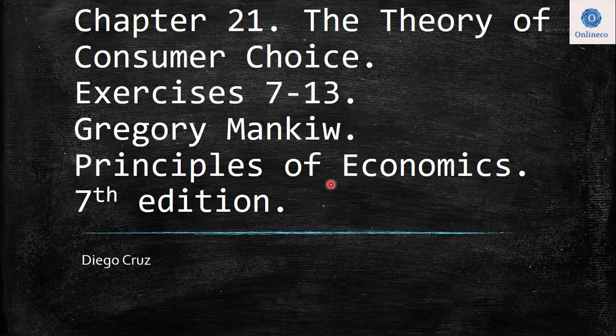Hi everyone, welcome to this video. We are going to develop today the exercises 7 to 13 of chapter 21. This is the chapter on the theory of consumer choice. Remember, this is the book of Gregory Mankiw, Principles of Economics.